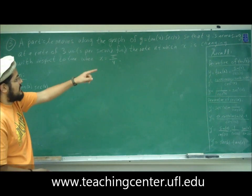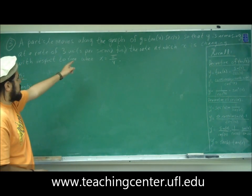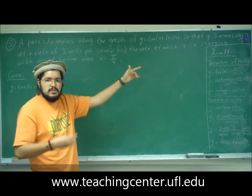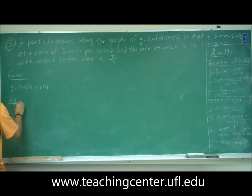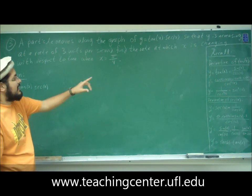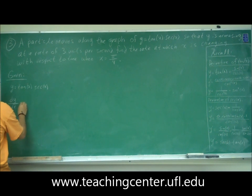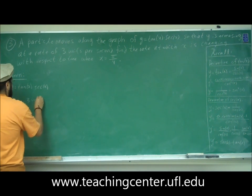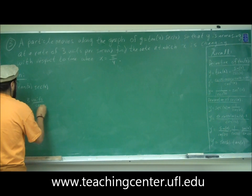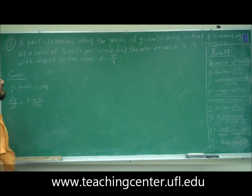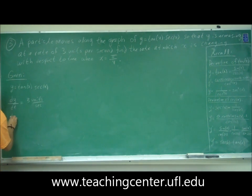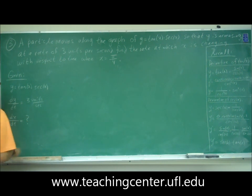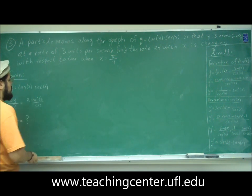What else did they tell us? Y is increasing at a rate of 3 units per second — so there's a rate of change. We know that dy/dt is equal to 3 units per second. And what we need to find: the rate at which x is changing, so we need to find dx/dt when x is equal to pi over 4.